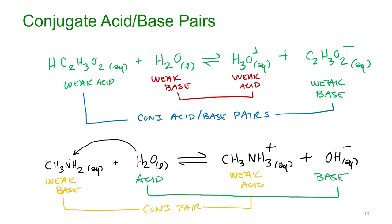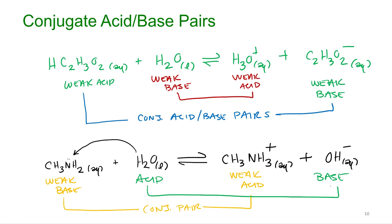So those are conjugate base pairs. So when we talked about what weak bases are, nitrogen-containing molecules - that's a big class of them. But then the additional class are conjugate bases of weak acids, conjugate pairs of weak acids.